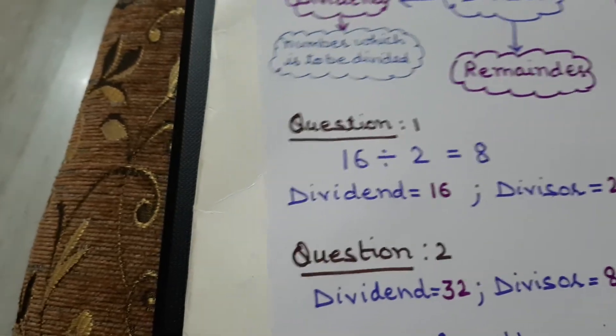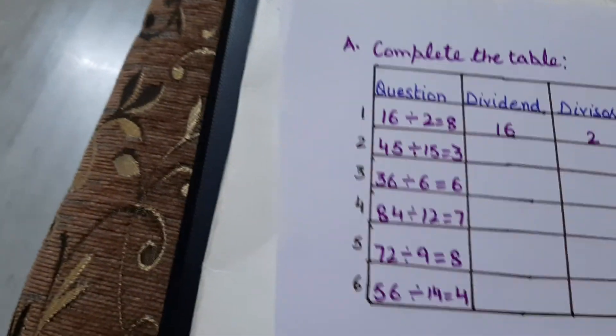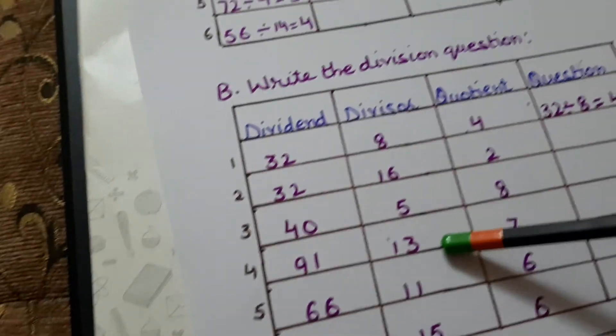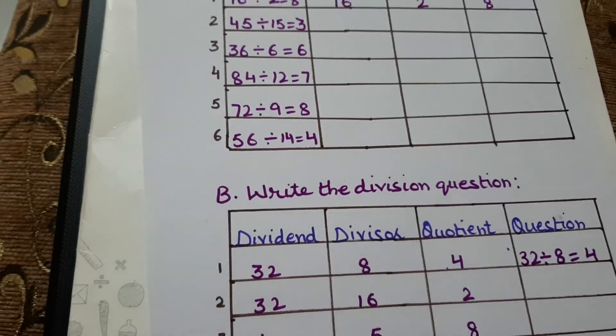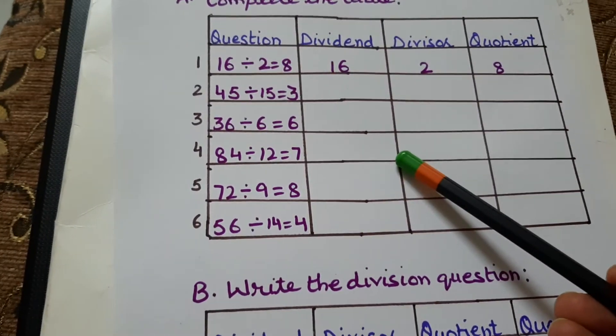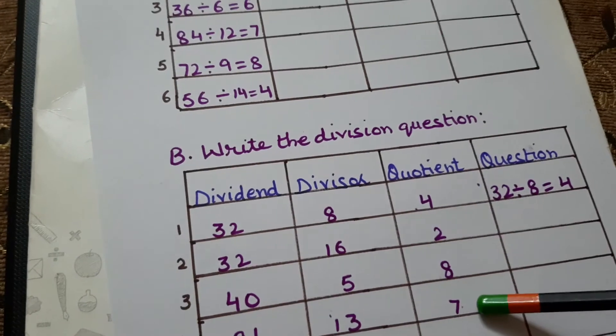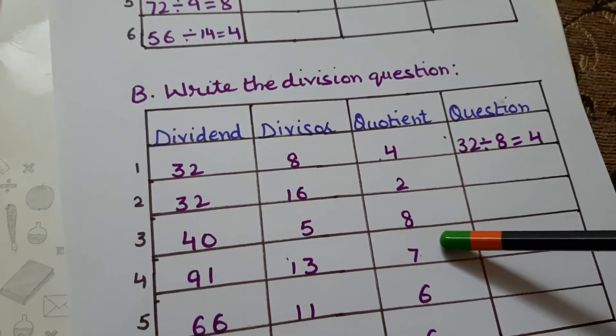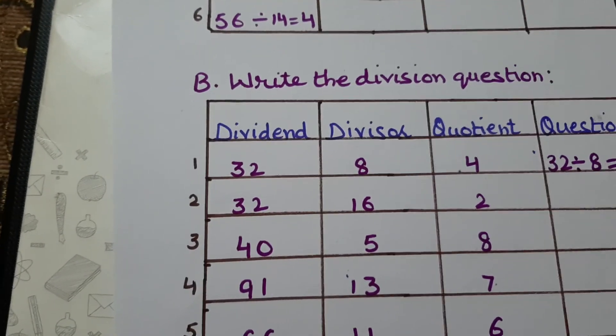Now you have to do these two sums related to the examples. This sum is based on first question and this sum is based on second question. Hope you all understand. Thank you. Stay safe.